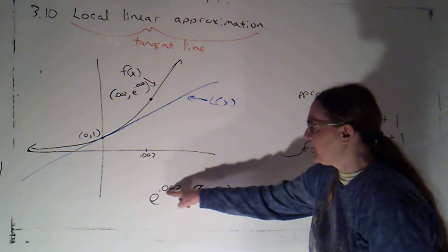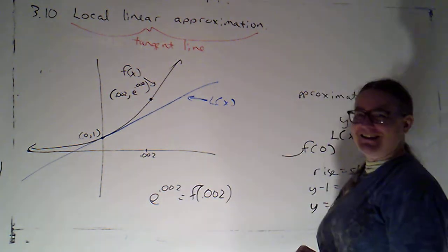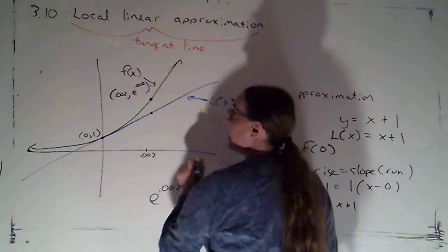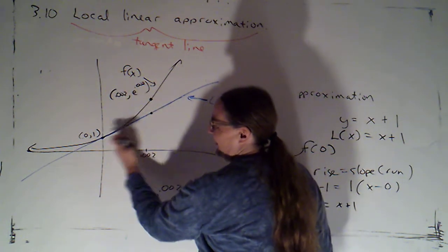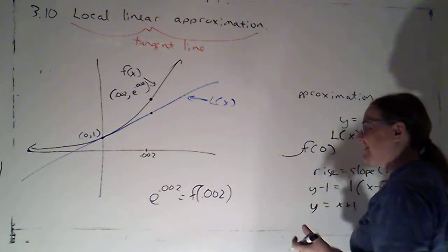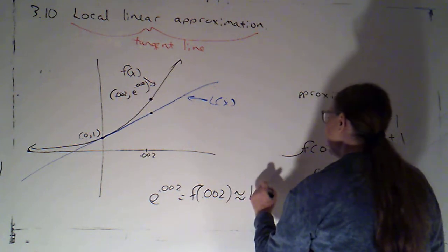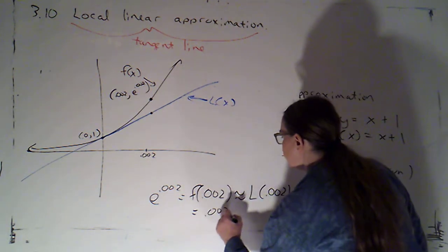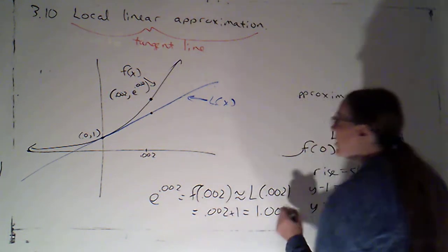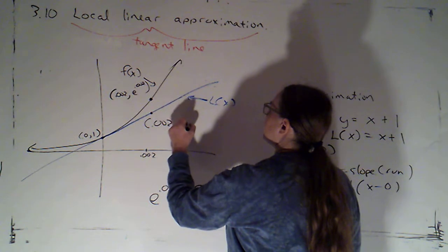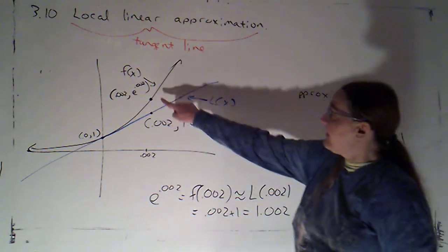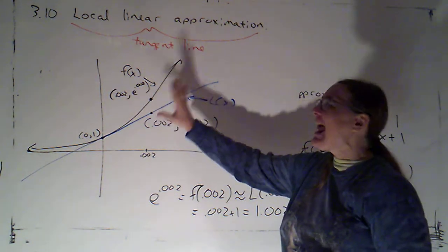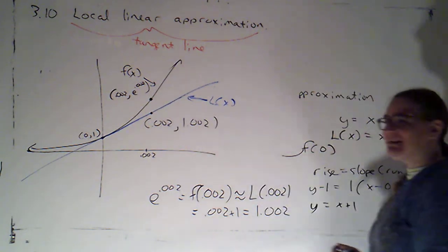Now I'm going to say that's close to the y value on the line. And recognizing that this should actually be drawn over here where they're much closer, it actually is very close. So we'll say that's approximately L of 0.002, and that would just be 0.002 plus 1, so that's 1.002. So all we're doing is saying that y value is difficult to calculate exactly. This y value is very easy to calculate exactly, and they're close. So we're going to calculate the easy one.